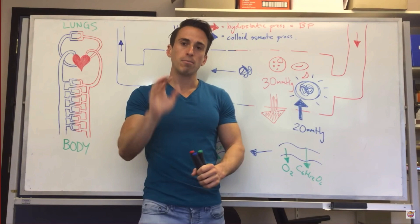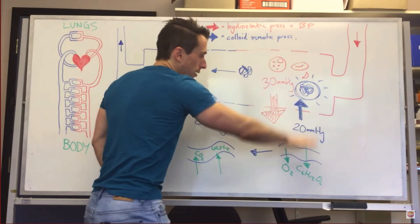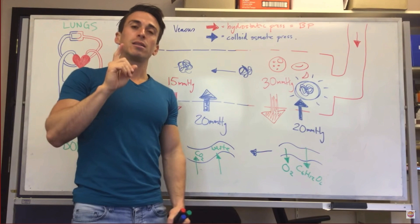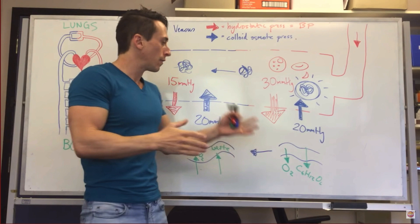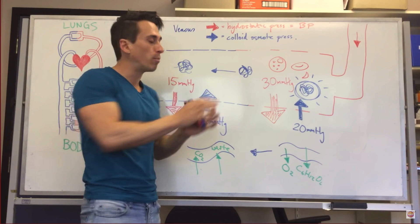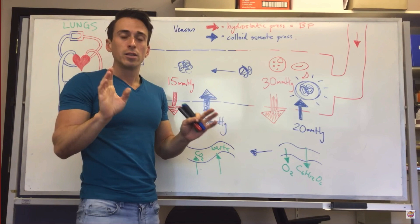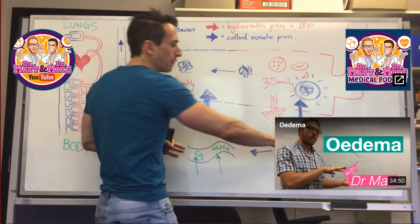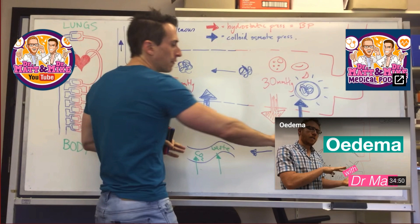Not all of the fluid pushed out on the arterial side gets pulled back in. There's a small percentage that once pushed out cannot get pulled back in. This is enough that at the end of the day, if we couldn't find a way to pull that fluid back in, our blood pressure would drop enough that we'd die. So we have the lymphatic system — lymphatic vessels around our tissues bring back that lost fluid from capillary exchange and return it to our venous supply.